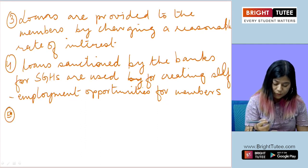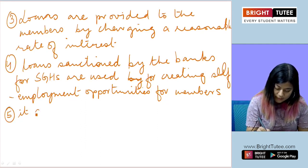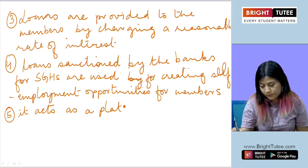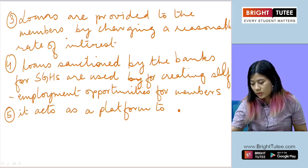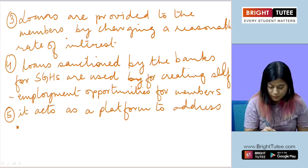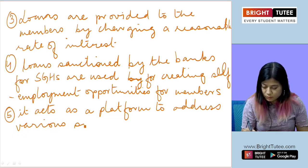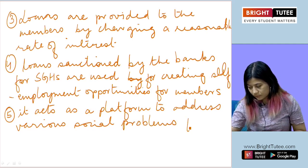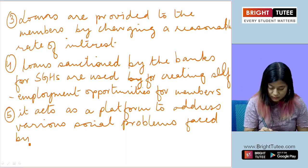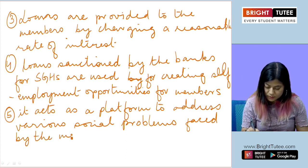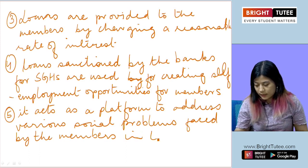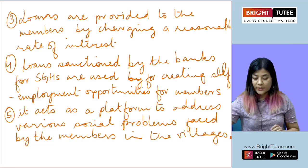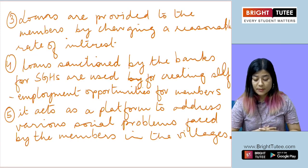Number five, self-help groups act as a platform to address various social problems faced by members in the villages. With this we have come to the end of this chapter.